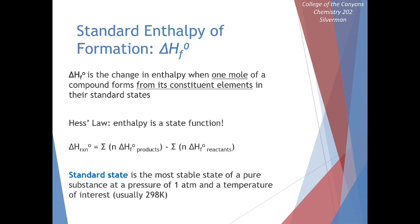With enthalpy of formation, we can have a very specific form of Hess's Law. We take our starting materials, break them down into individual elements, then take those elements and build our products. Those are the steps in the mechanism. Adding up the enthalpies for those steps gives the enthalpy for the overall process, which we can simplify into a useful formula.